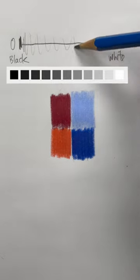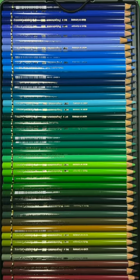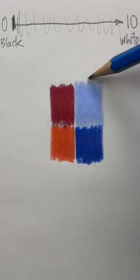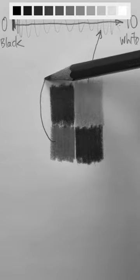0 is the black and 10 is the white. To figure out the value of a color, think about it in black and white terms. Once you know where that color falls on a gray scale, you'll know what its value is.